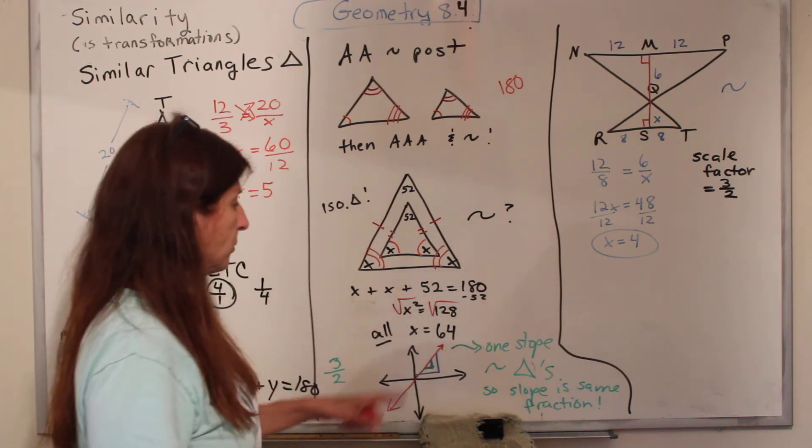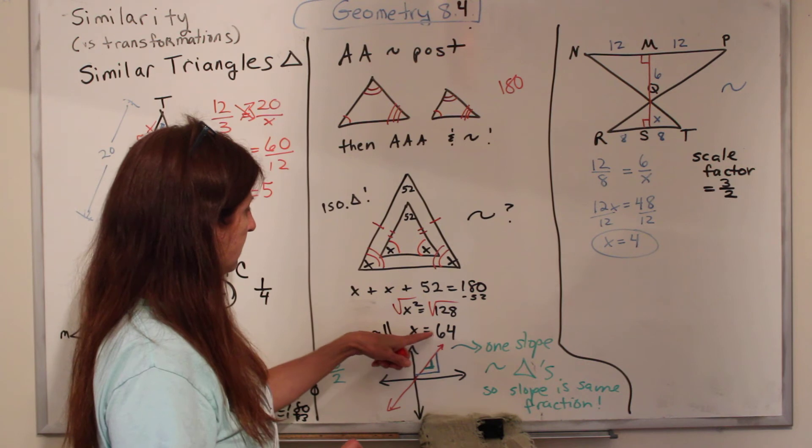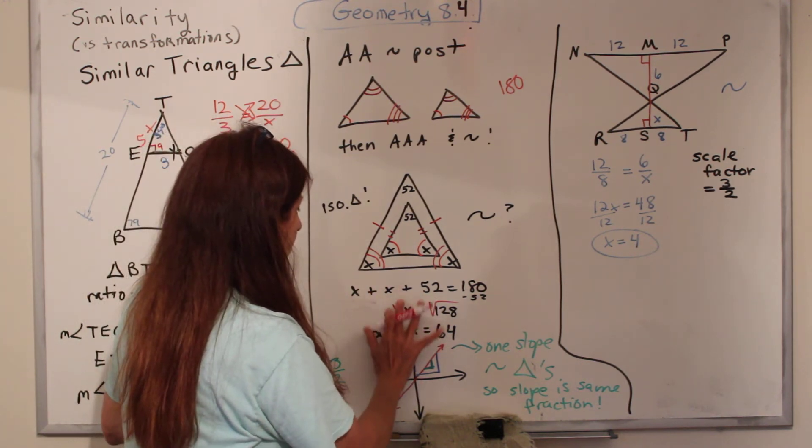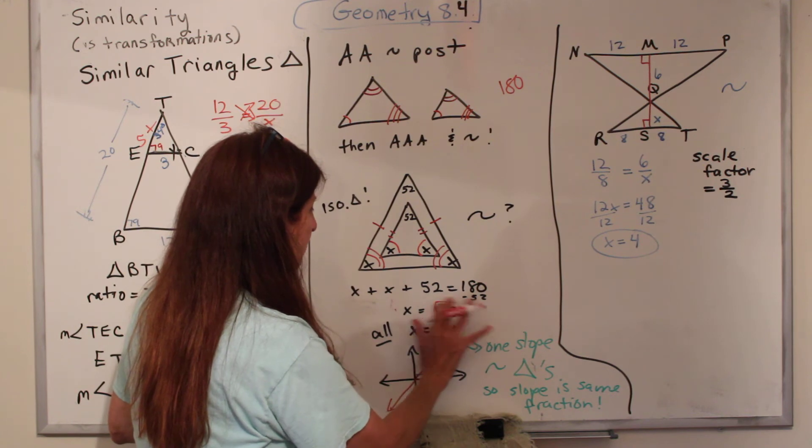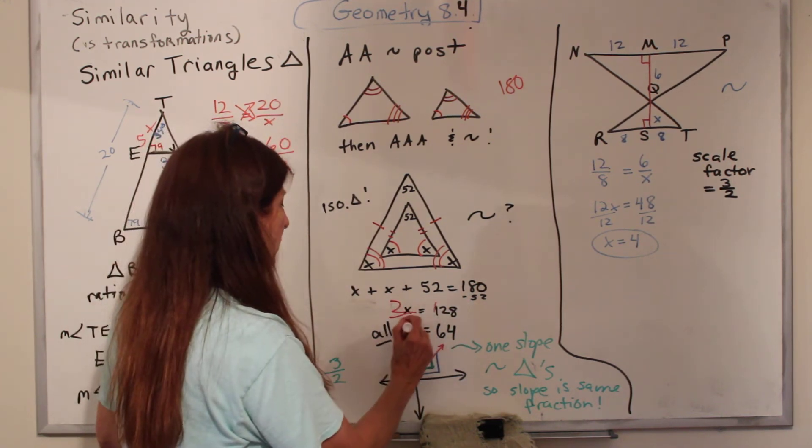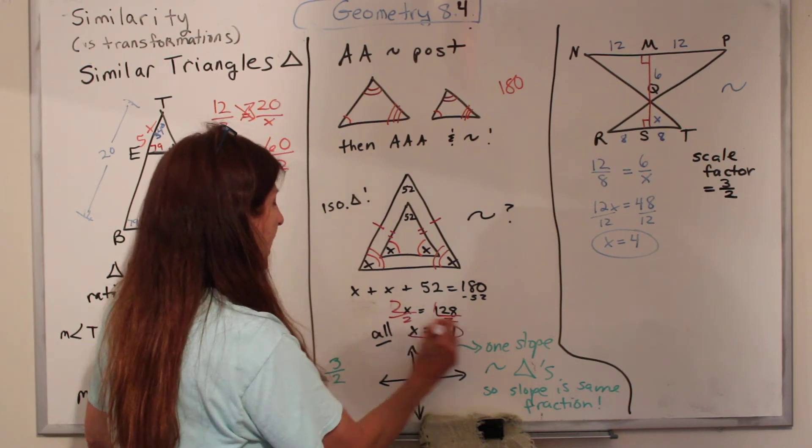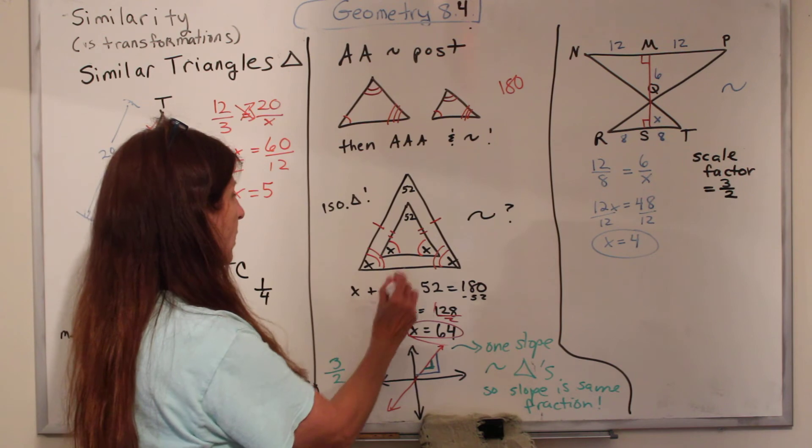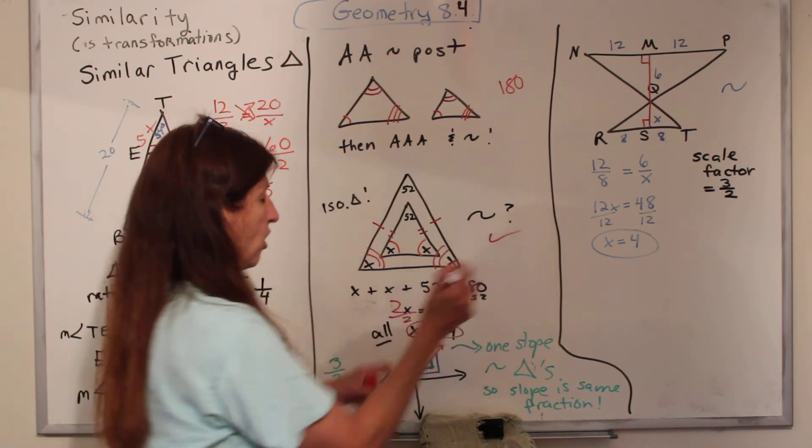x squared is 128. Take the square root of both sides. No, that's not x squared. I've been teaching so long today. I think I've done too many videos at once. 2x equals 128, divided by 2, divided by 2. x is 64 for all of them. So we know that, yes, they are similar.